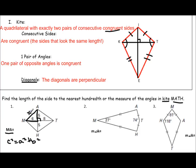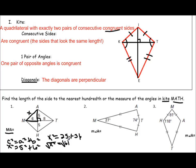So we should be using c² = a² + b², where c is my hypotenuse, so x squared, and a and b are my legs: 5² + 6². x² equals 25 plus 36, so x² equals 61. The value of x will be the square root of 61, so x equals 7.8. So MA here is equal to 7.8.